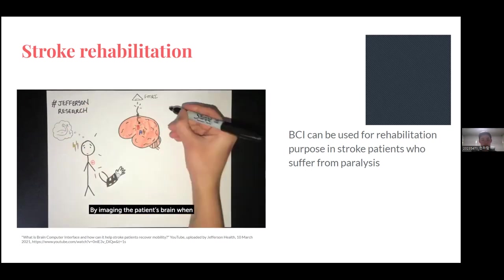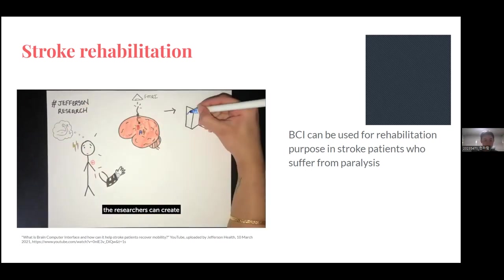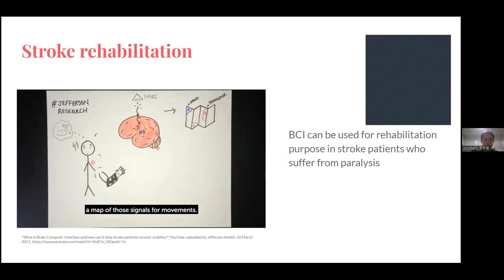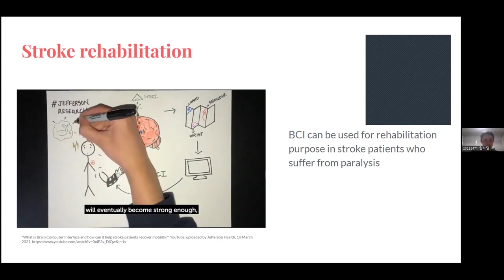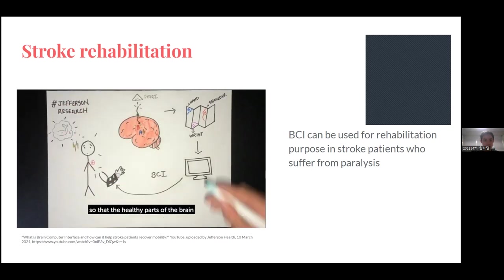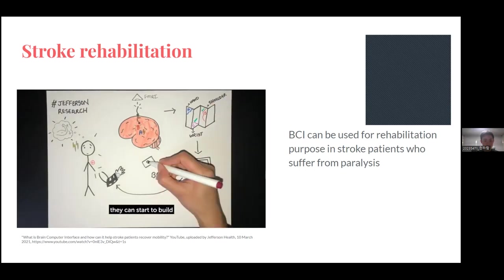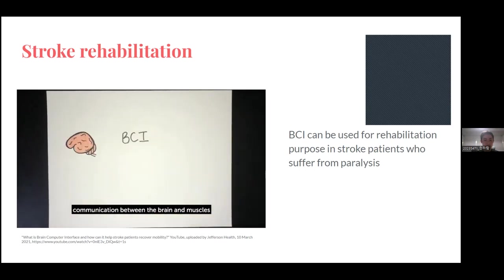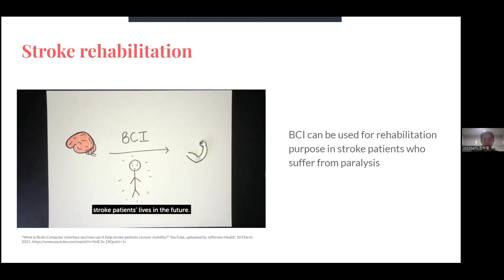This is brain-computer interface, or BCI. Jefferson researchers are testing this in a stroke patient who has limited mobility in his left arm. They've implanted an electrode in the brain that sends signals to a robotic brace. By imaging the patient's brain when thinking about movement, they can create a map of those signals and use BCI to operate the robotic arm. This new study could change stroke patients' lives in the future.